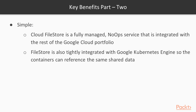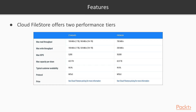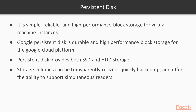Cloud Filestore is a fully managed, no-ops service integrated with the rest of the Google Cloud portfolio. You can easily mount Filestore file shares on Compute Engine VMs. Filestore is also tightly integrated with Google Kubernetes Engine so your containers can reference the same shared data. Cloud Filestore offers two performance tiers, which you can take a look at in the table below.